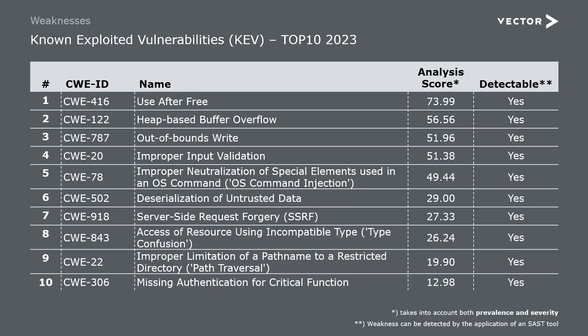To get an impression and a feeling for it, here's a look at the current known exploited vulnerabilities Top 10. There we see weaknesses from different areas. Most of them deal with memory safety. The next sections are improper input validation, injection, access and resource control, resource management and file handling. What we also see here is the analysis score. This analysis score considers not only the rated severity, but also the probability of being exploited based on known exploited vulnerabilities. And importantly, all these weaknesses are detectable using a Static Application Security Testing tool — SAST. The relevance of checking for these weaknesses will also become apparent with the next example.